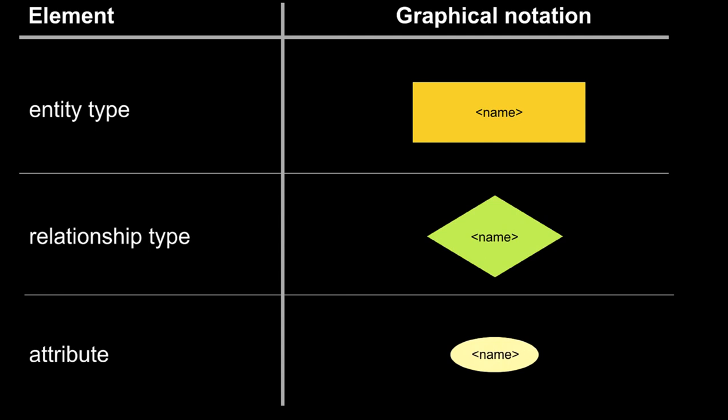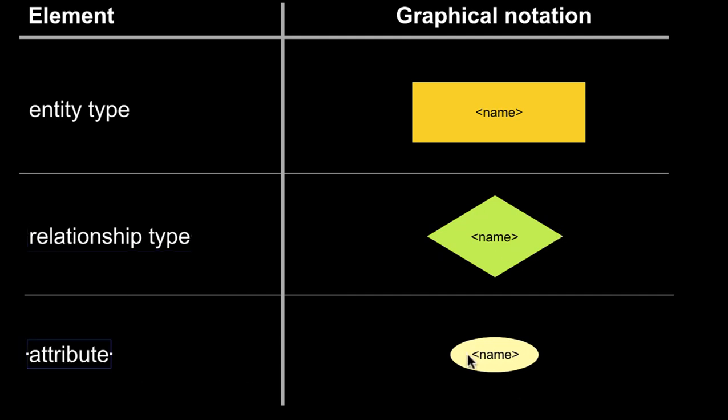Entity relationship modeling is the most important data modeling technique if you want to come up with a well-designed database schema, like in a SQL database. Entity relationship modeling has three very important elements: an entity type, whose graphical notation is a rectangle; a relationship type, which is a rhombus; and an attribute, which is an ellipse. Those are the three elements we will need.